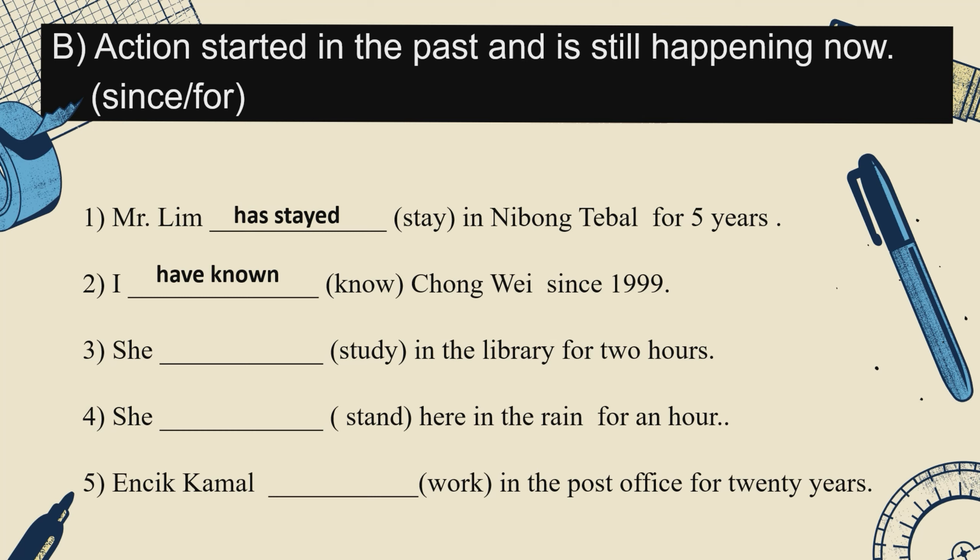Example number one: talk about Mr. Lim — action still happening now, for five years. Number two: 'I have known Zhongwei since 1999.' Since 1999 — action started in the past in 1999, and it's still happening now — 现在还认识他. So write: 'I have known Zhongwei since 1999.' You must use 'have' or 'has' with the past participle for this type of sentence.